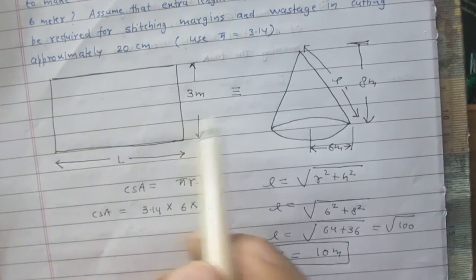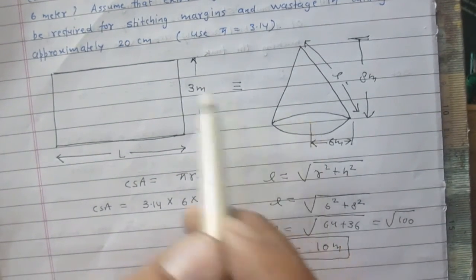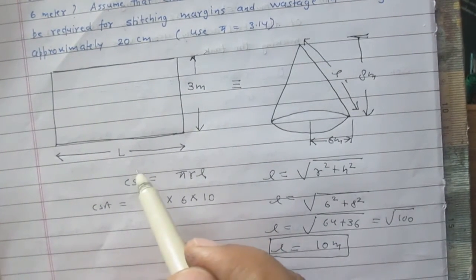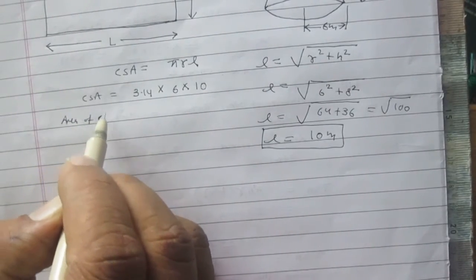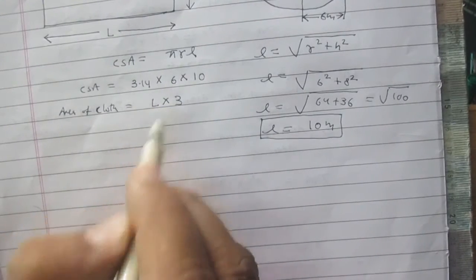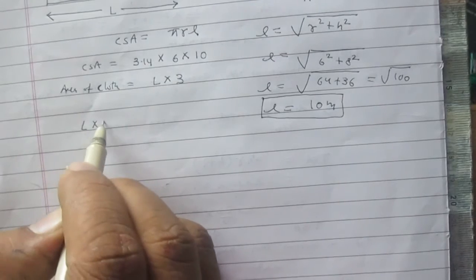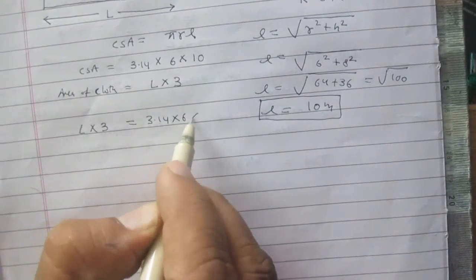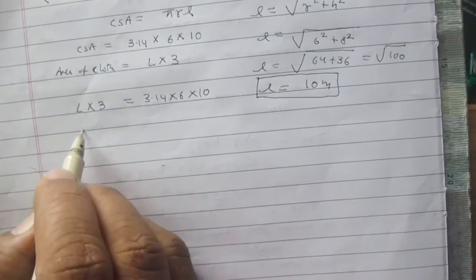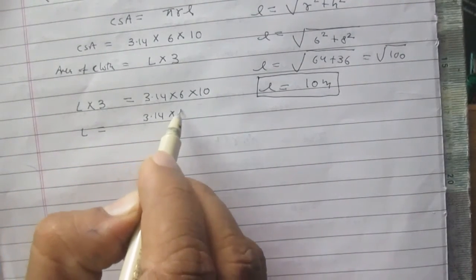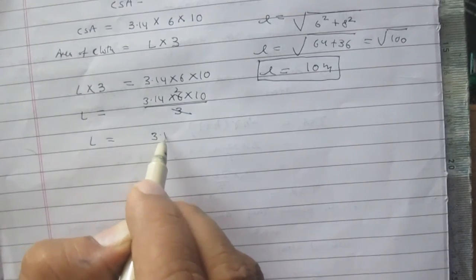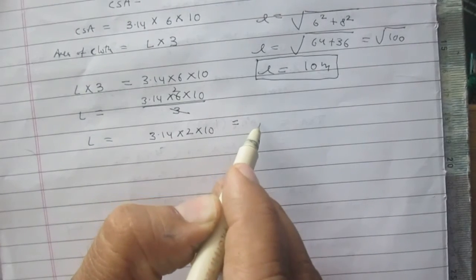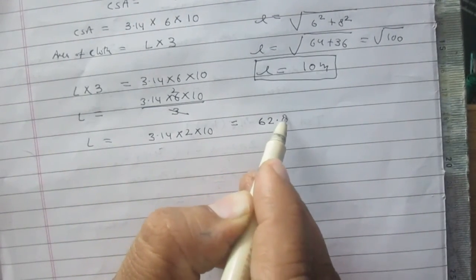We have already discussed that the area of the tarpaulin cloth equals the curved surface area of the cone. The cloth is like a rectangle, so its area is length × breadth. Therefore, L × 3 = 3.14 × 6 × 10, which gives L = (3.14 × 6 × 10) ÷ 3 = 3.14 × 2 × 10 = 62.8 meters.